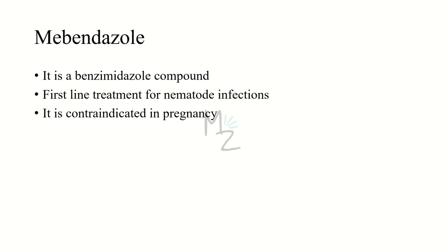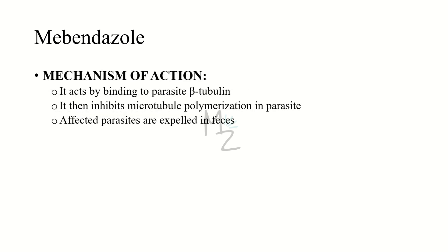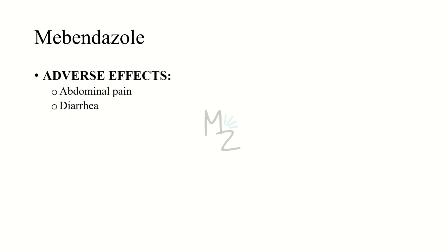Starting with mebendazole: it is a synthetic benzimidazole compound and is a first-line agent for the treatment of infections caused by nematodes like whipworm, pinworms, and hookworms. It is contraindicated in pregnancy. Mechanism of action: it acts by binding to the parasite's beta-tubulin and inhibiting microtubule polymerization in the parasite. Affected parasites are expelled in the feces. Adverse effects include abdominal pain and diarrhea.